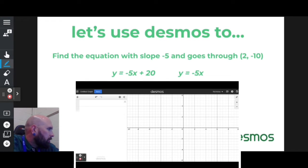All right, for this guy, I'm supposed to find the equation that has a slope of negative 5 but also goes through a specific point.